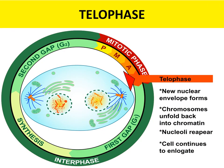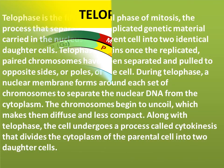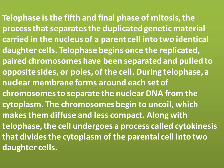The final phase is telophase. Telophase begins once the replicated chromosomes have been separated and pulled to opposite poles of the cell. During telophase, a nuclear membrane forms around each set of chromosomes to separate the nuclear DNA from the cytoplasm, and the chromosomes begin to uncoil, becoming diffuse and less compact. Along with telophase, the cell undergoes a process called cytokinesis, which divides the cytoplasm of the parental cell into two daughter cells.